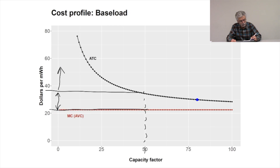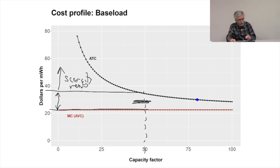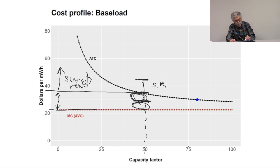Any price above that means scarcity rents. So if part of the year the price is in the range above average variable cost but below average total cost, I'll be making losses but doing better than not running. As long as there are other times of year when the price is above average variable cost, I can make my scarcity rents, cover those losses, and earn an average rate of return for the power plant.